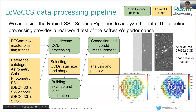I'm leading the processing of the DECAM exposures for the survey clusters with the Rubin science pipelines. The processing provides a real-world test of the software's performance. We would like to thank the Rubin science pipeline team for teaching us how to use the software. The input for the CCD processing includes DECAM raw and calibration images, Gaia as the astrometry reference catalog, and SkyMapper as the photometry reference catalog. We select CCDs with good observation conditions.